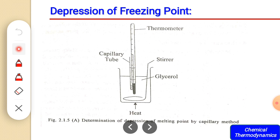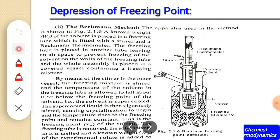The second method is the Beckmann method. The thermometer used in this method is called the Beckmann thermometer — it is not an ordinary thermometer. In this method, a known weight of solvent is placed in a freezing tube fitted with a stirrer and the Beckmann thermometer. The freezing tube is placed inside another outer tube, leaving an air space to prevent freezing of the solvent on the walls. The whole assembly is placed in a covered vessel containing the freezing mixture.